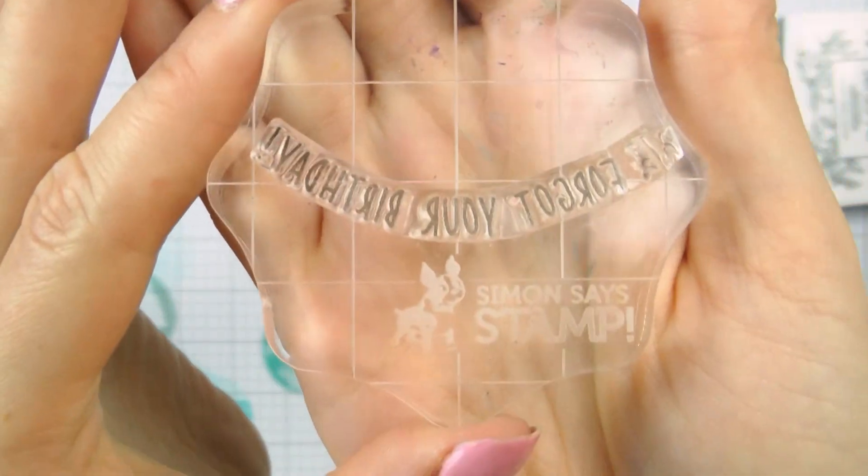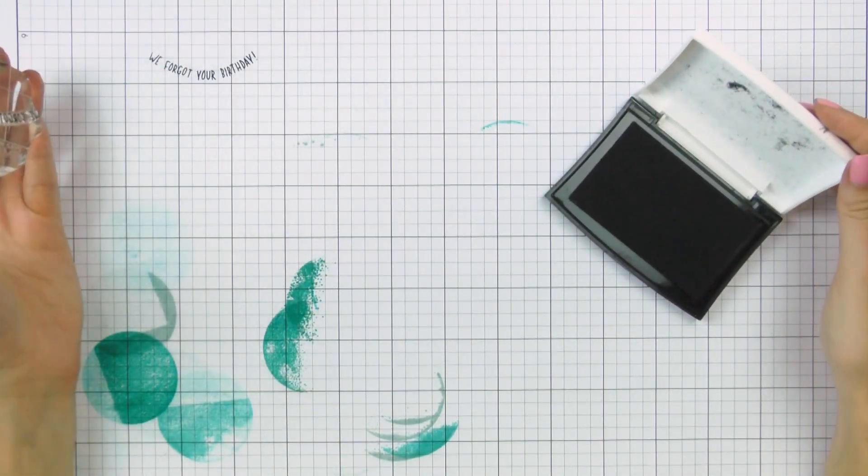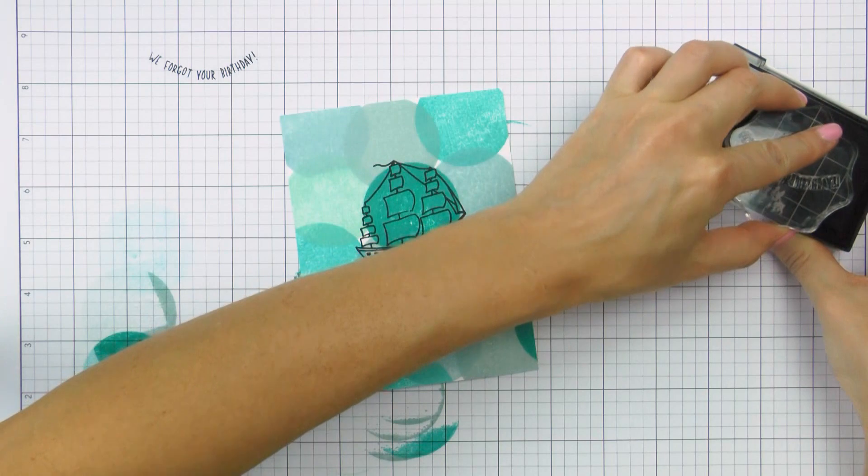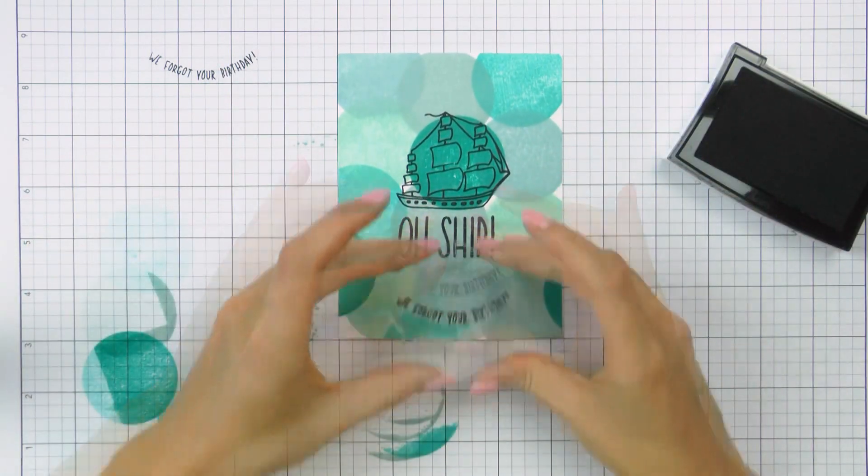Next I grabbed the smaller sentiment, We Forgot Your Birthday, and a clear block and formed it into a curve. It was much easier for me to align this on a clear block rather than the MISTI door, so this is why I used a block here. And once again I used VersaFine Onyx Black ink for stamping.